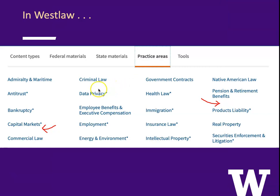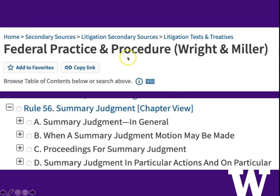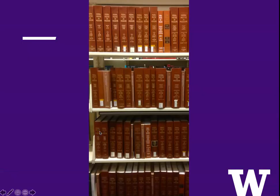In Westlaw, this is a little bit harder to do because the practice areas don't include civil procedure or practice and procedure. I happen to know that there is a big treatise called Federal Practice and Procedure by Wright and Miller, so I was able to find it. It has a chapter on summary judgment and away we go. It is also a huge set. So Lexis and Westlaw each have a huge set on civil procedure and you can look at them online.